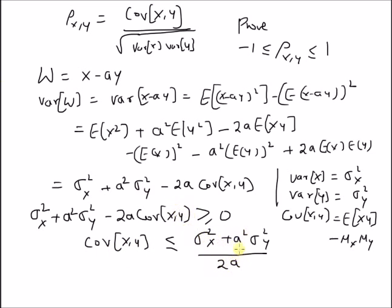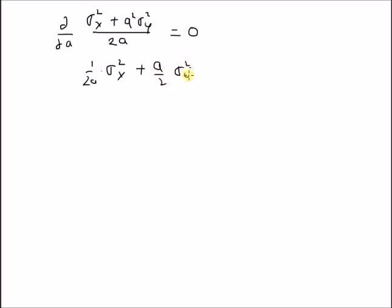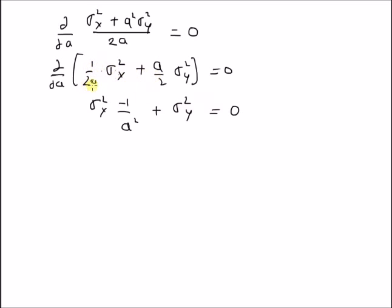Now we want to find the value of a at which this bound is tightest, that is, where this expression reaches its maximum and minimum. We differentiate with respect to a and set it equal to zero. This gives one over 2a times sigma squared x plus a over 2 times sigma squared y equals zero. Differentiating, we get sigma squared x times minus one over a squared plus sigma squared y equals zero.